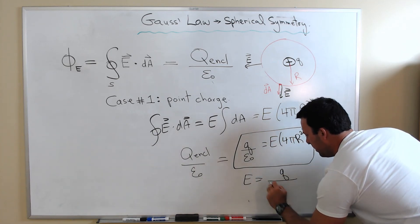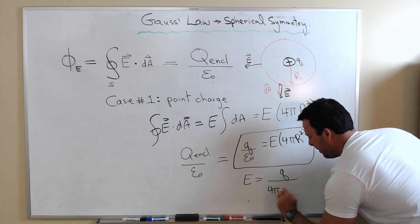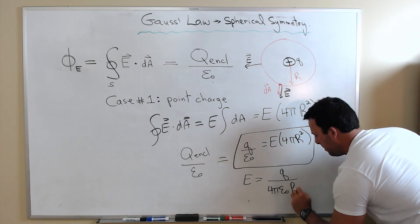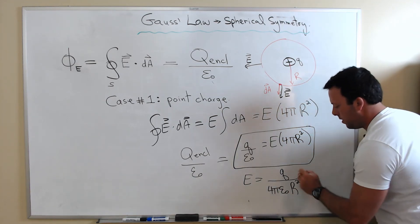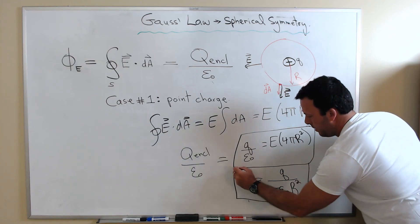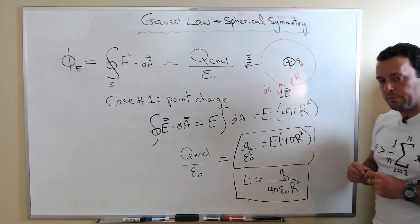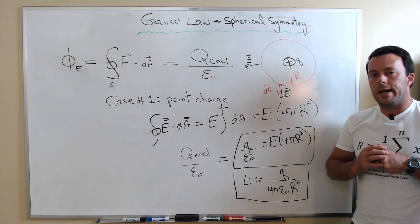The magnitude of the field is simply Q divided by 4π epsilon zero over r². And that result we already knew, but you can prove it very easily using Gauss's law.